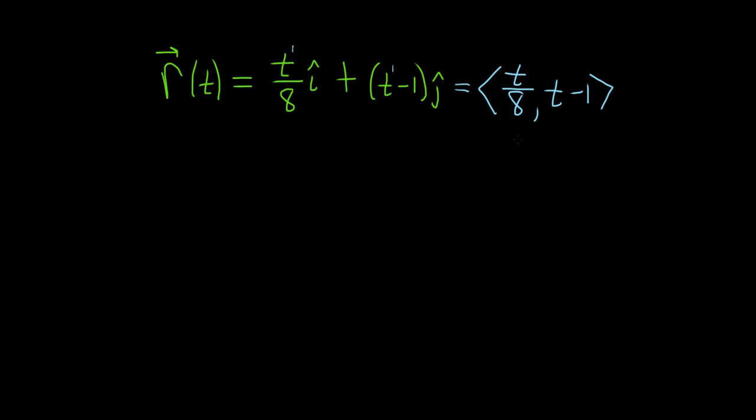To do that, keep in mind that this is your x component and this is your y component. So x is actually equal to t over 8 and y is actually equal to t minus 1.